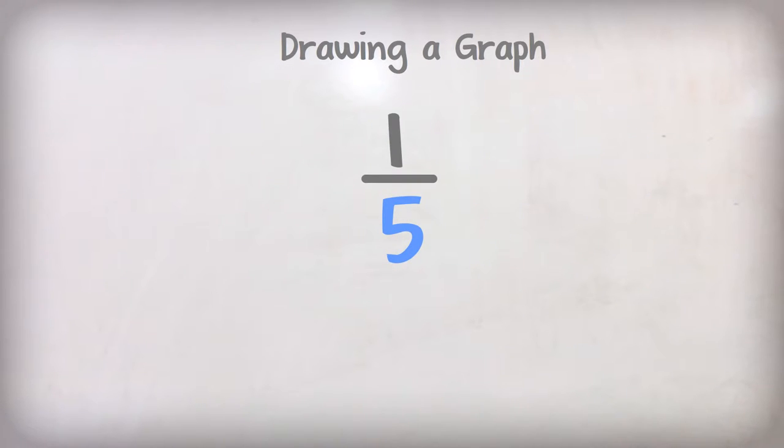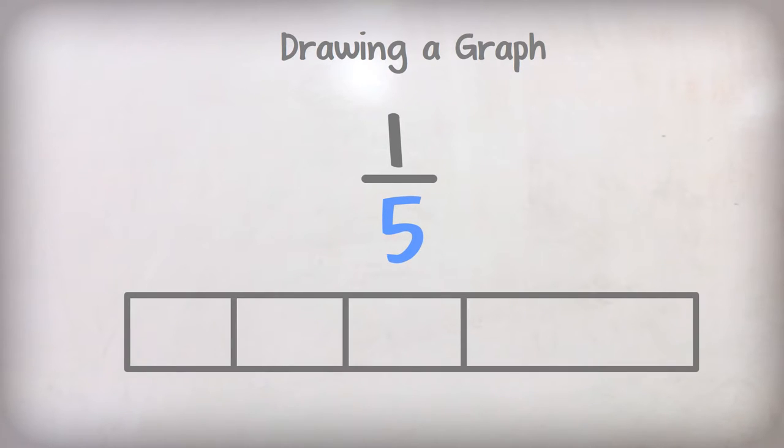The denominator is the number of empty boxes we will draw on our graph. In the fraction one-fifth, five is the denominator, so we draw five boxes.